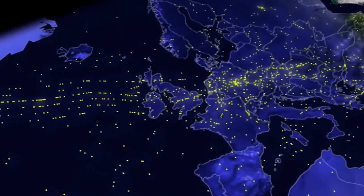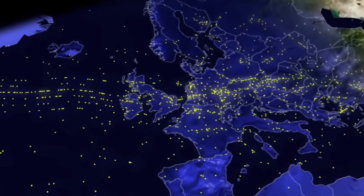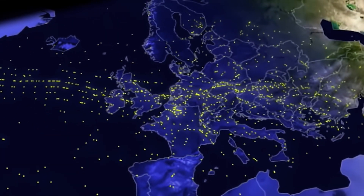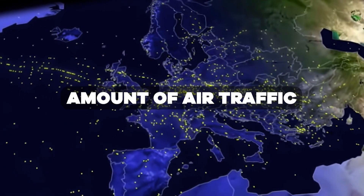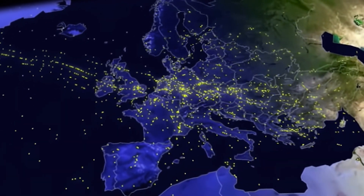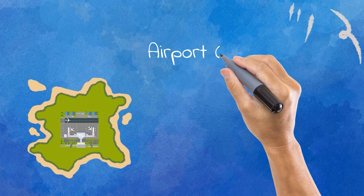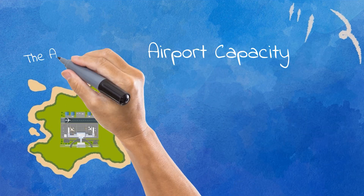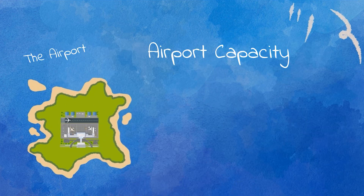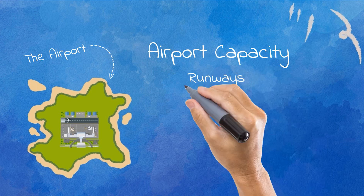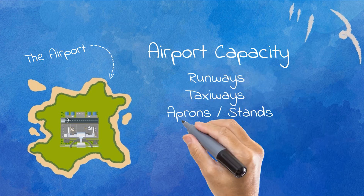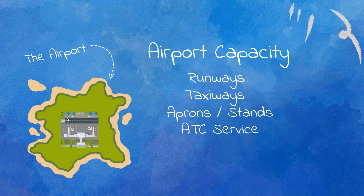Managing two things: demand and supply. In aviation terms, this is balancing between the amount of air traffic and the capacity of airspace and airports. Every airport has a capacity of traffic that they can handle safely — a value calculated based on the configuration of runways, taxiways, apron capabilities, ATC services, arrival and departure routes, and so on. This value is not constant.